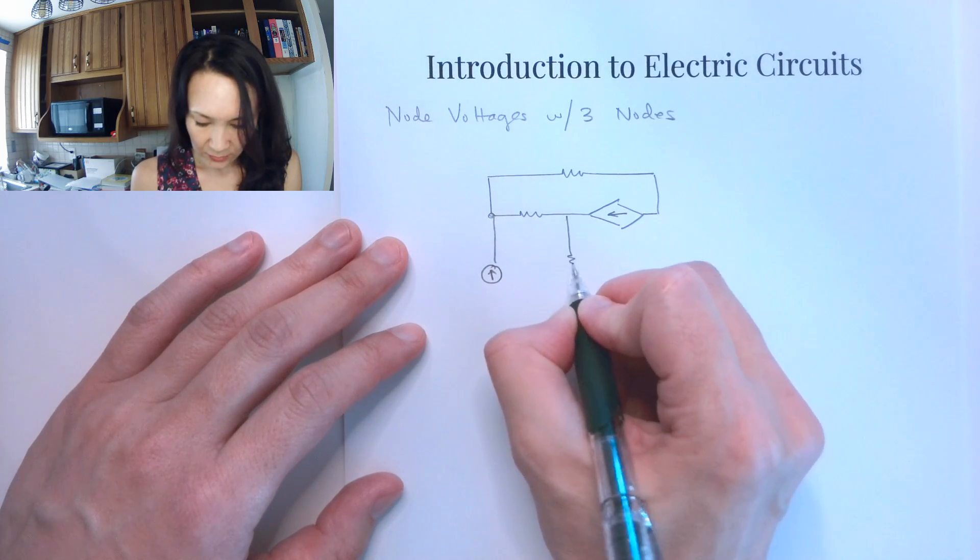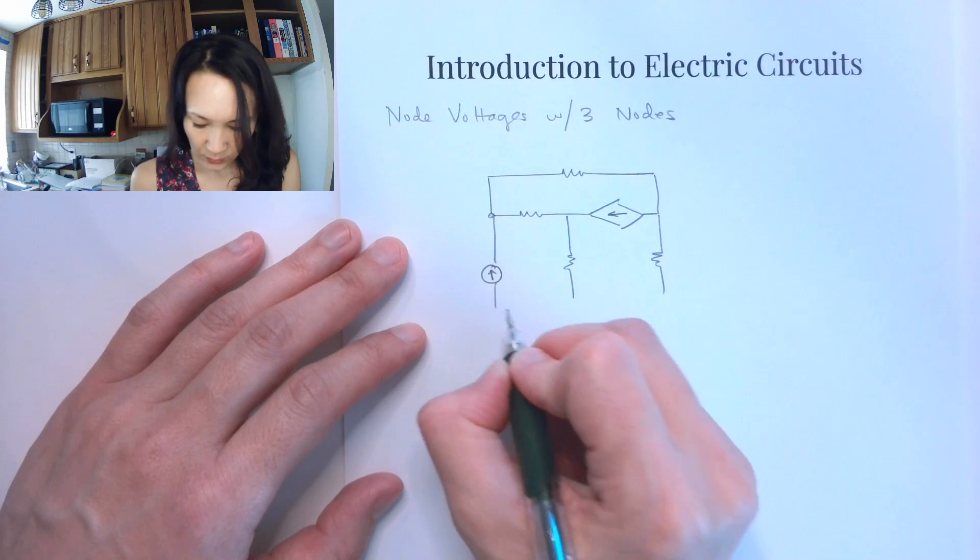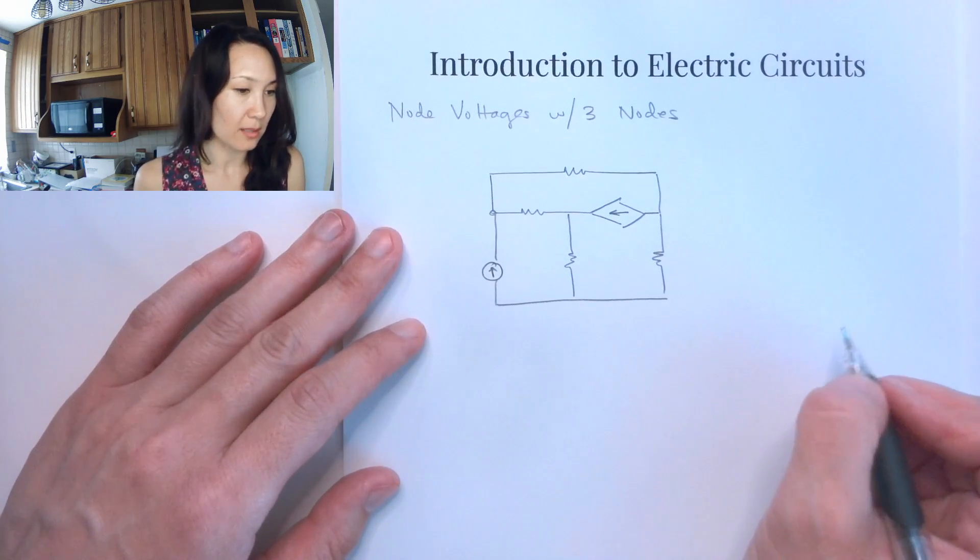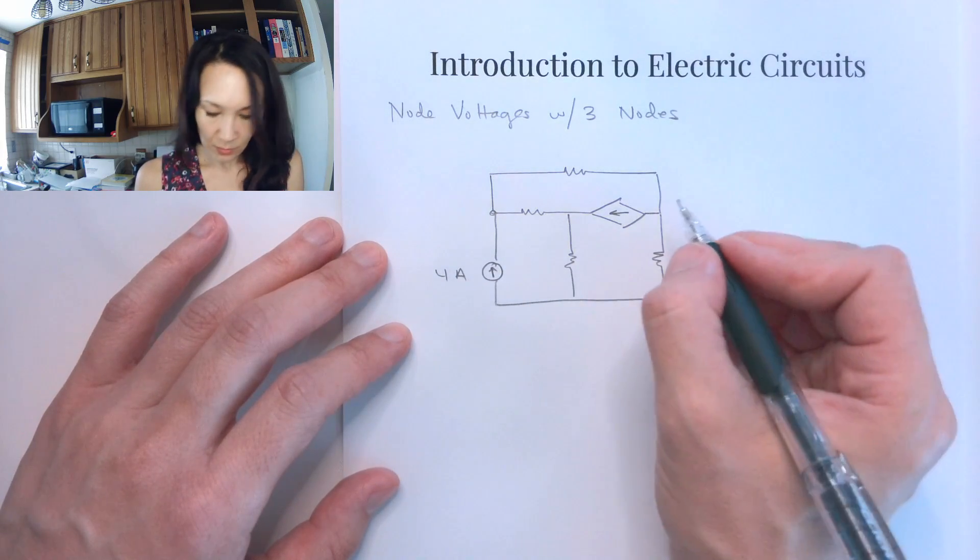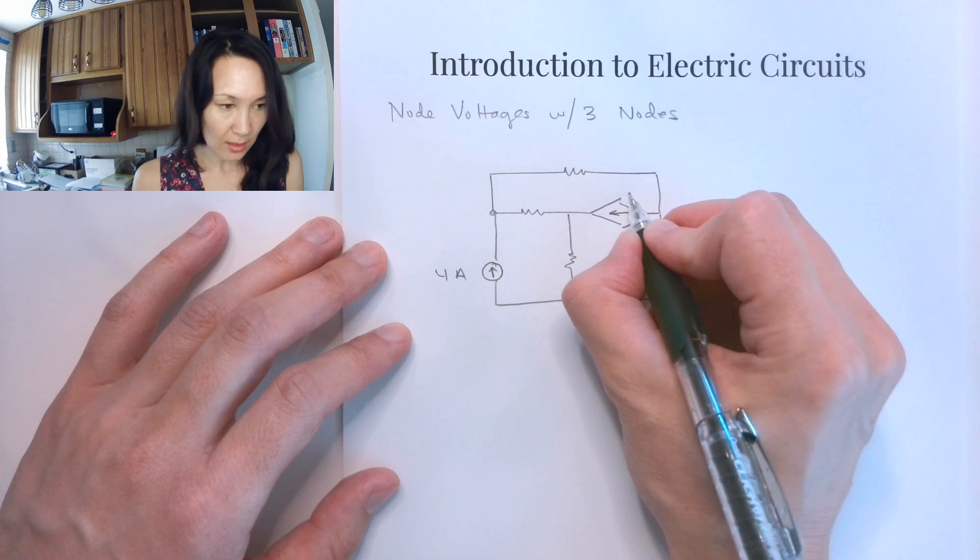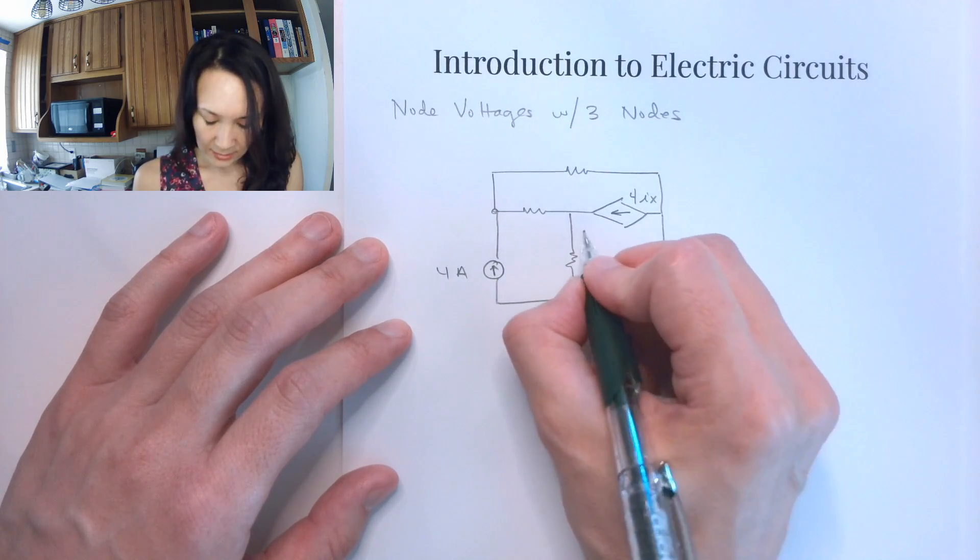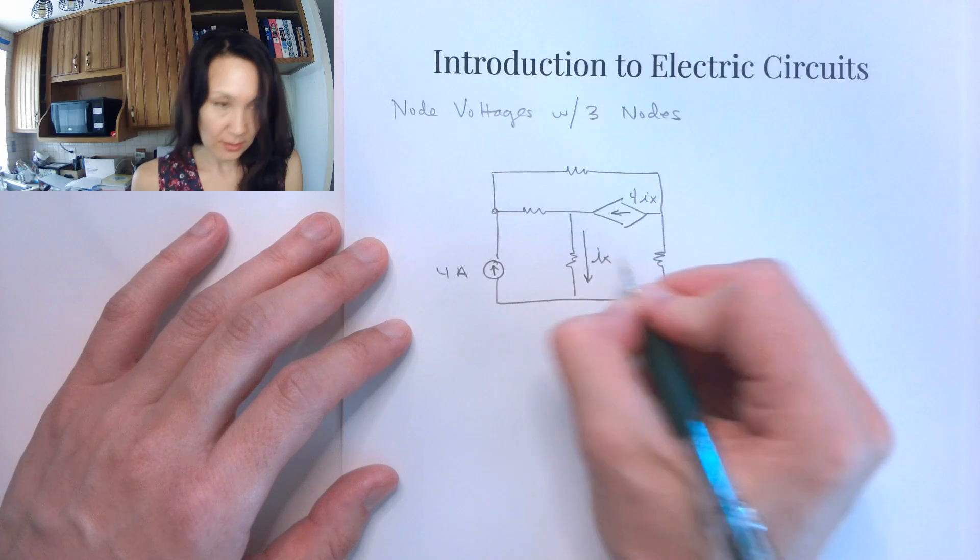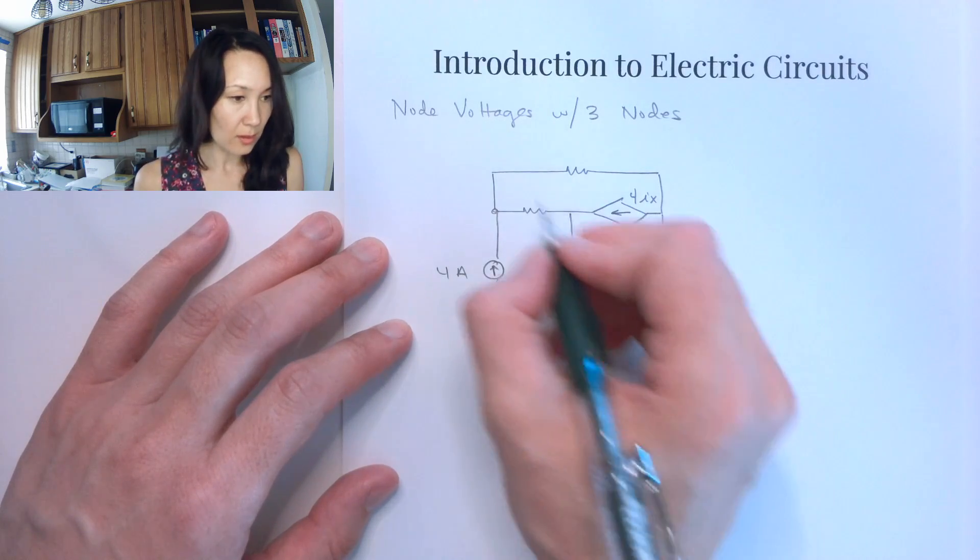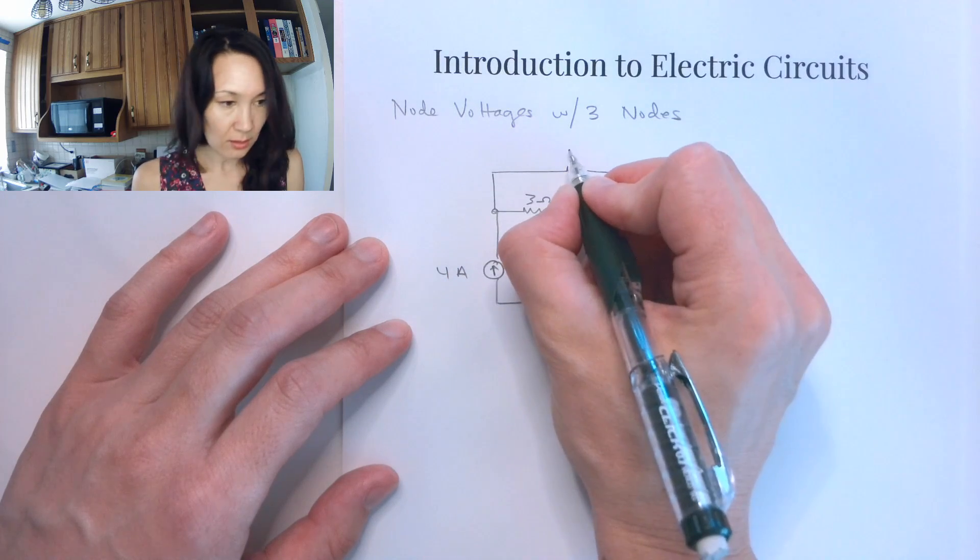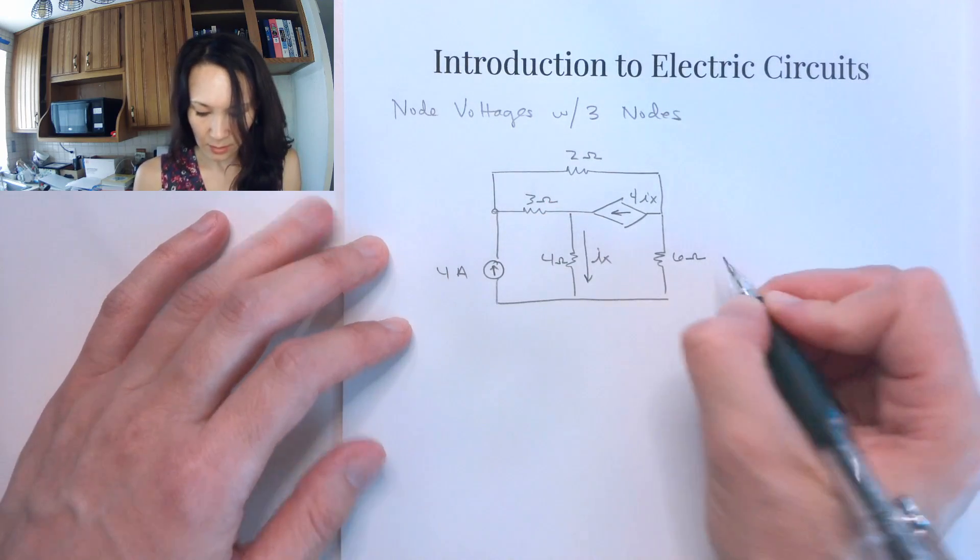Suppose we have a circuit like this. I'm actually putting in a dependent source in this one, so you can see how we would handle that at the same time. So let's let this current source be 4 amps. Suppose that this current source here is 4 times Ix, where Ix is the current that's going through this resistor. This resistor here has a value of 4 ohms. This resistor is 3. This resistor on the top is 2. And then we can let this one be 6 ohms.